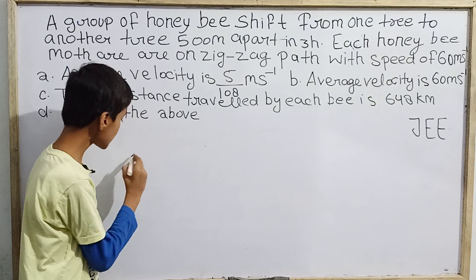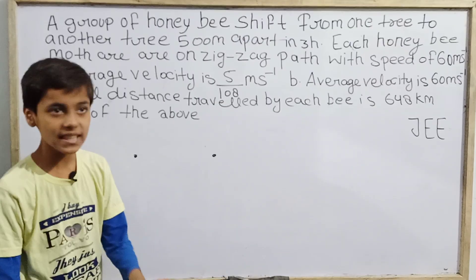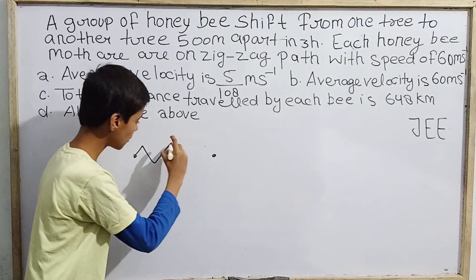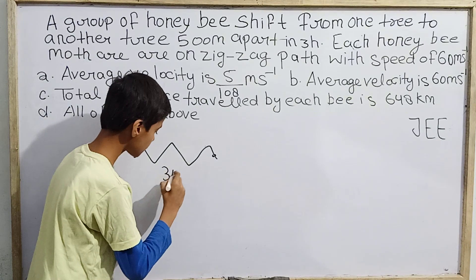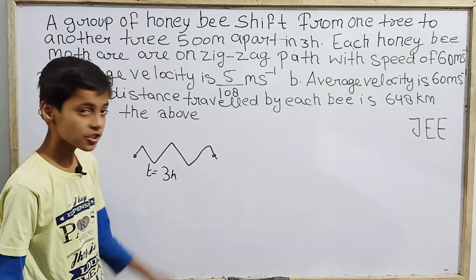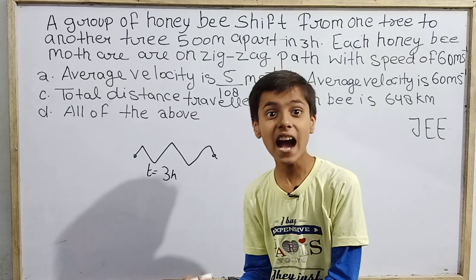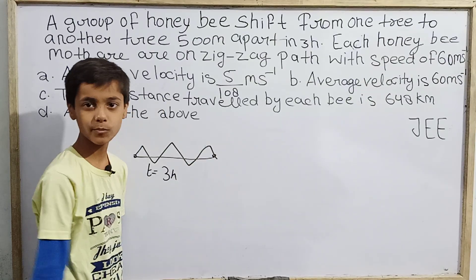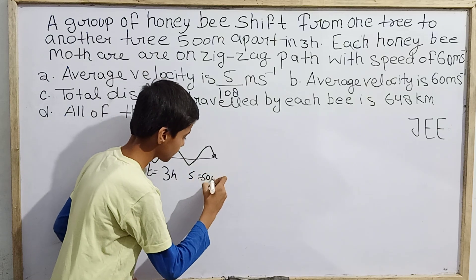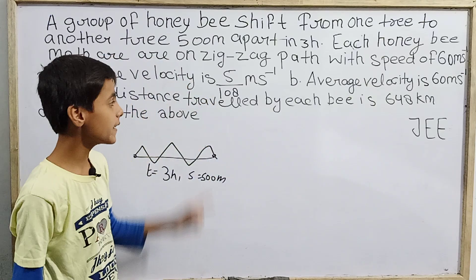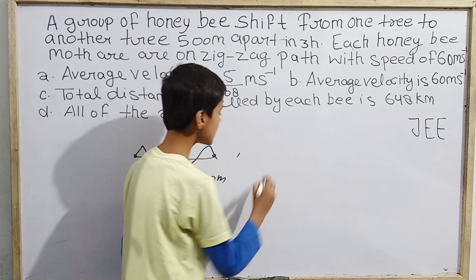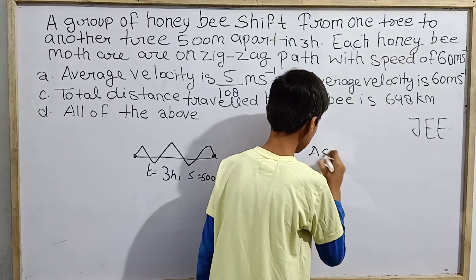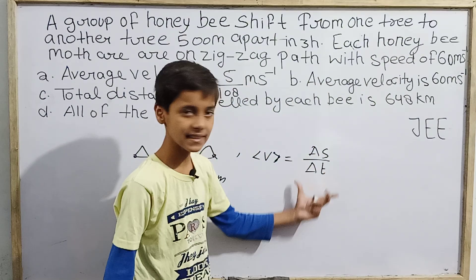Let me draw a diagram. Imagine one tree here and another tree there. The group of honeybees shifts from this tree to that tree on a zigzag path. Time taken is three hours. The displacement is 500 meters, since the two trees are 500 meters apart and displacement is the straight line from initial to final point. The formula for average velocity is: average velocity = net displacement / net time.